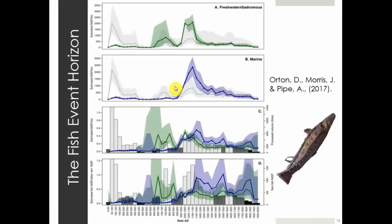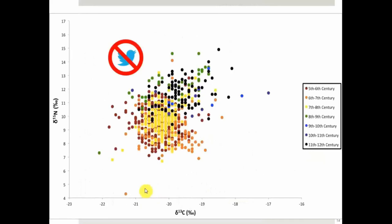This is where the concept of the 'fish event horizon' comes up. James Barrett at Cambridge has done a lot of work on this. What we see is one big spike around the Viking period and the North Sea fish trade, which is what most people think kicks this off. However, a paper that came out a couple of weeks ago shows a freshwater zooarchaeological signature a couple of centuries earlier, when Christianity arrives — and I find this really exciting for my PhD going forward.